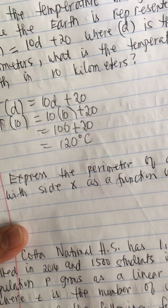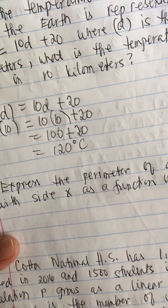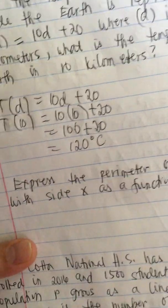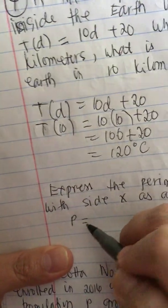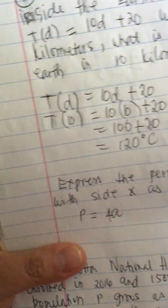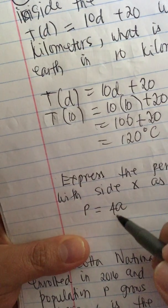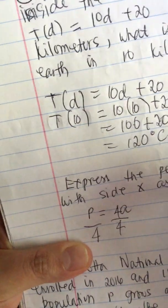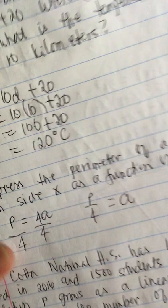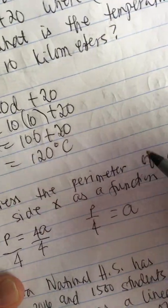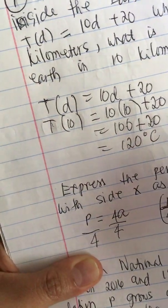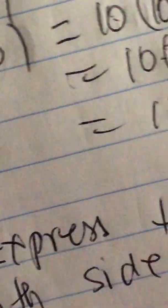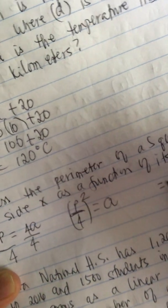Express the perimeter of a square with side x as a function of its area. The perimeter of a square p equals 4x. Now isolate: x equals p over 4. This is also a function of area. We have p(a), and it's a square so we have to square this. So p(a) equals, p squared over 4 squared is 16.